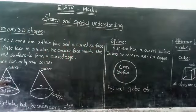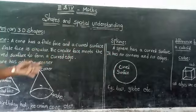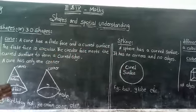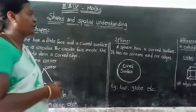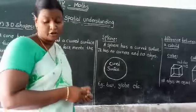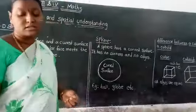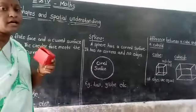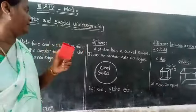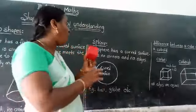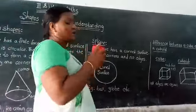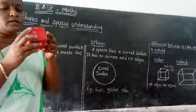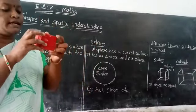The sphere has no edges and no corners. Examples of a sphere are a ball and a globe. Now let's look at the difference between a cube and a cuboid. This is the cube and this is the cuboid. All edges are equal in a cube.